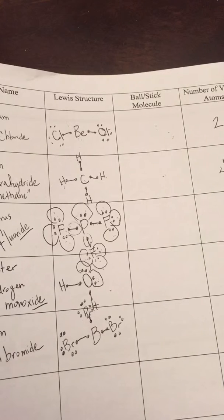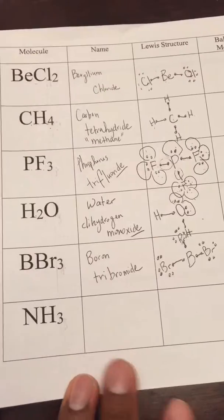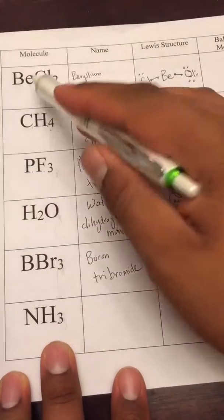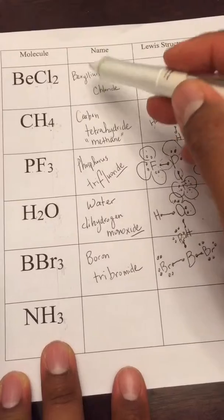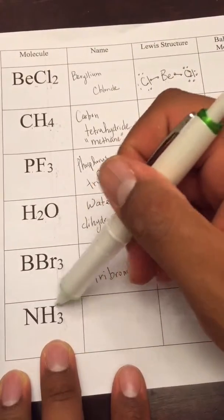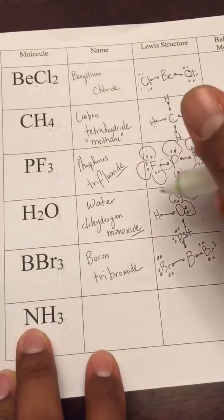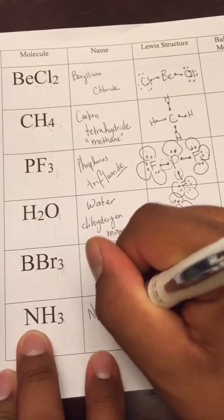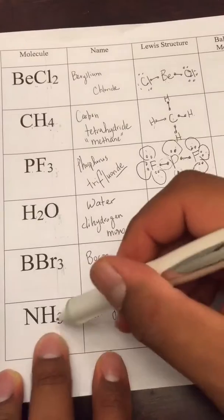Here again we're gonna name it. They're all covalent, with the exception of beryllium. Any compound with beryllium will be ionic, so you just name it beryllium whatever it is. Here we have a covalent compound with only one nitrogen, so we're gonna name it as is - nitrogen.